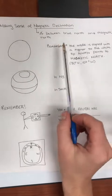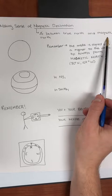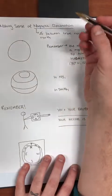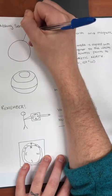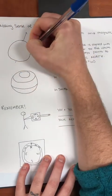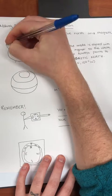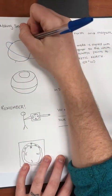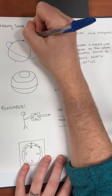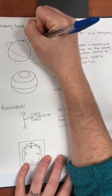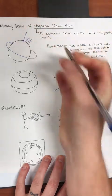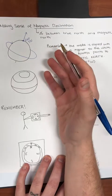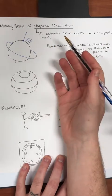Magnetic declination is the angle between true north and magnetic north. Our planet has a geographic north pole — the place where our planet's rotational axis intersects the surface — and that's called true north. We also have a magnetic field, and the place where that magnetic field intersects the surface is the magnetic north and south poles.